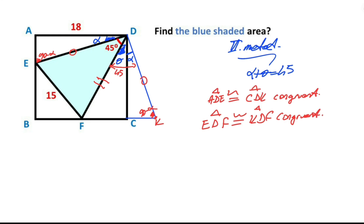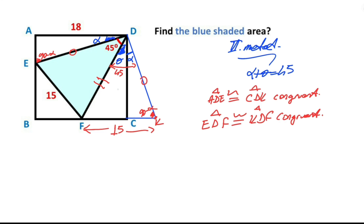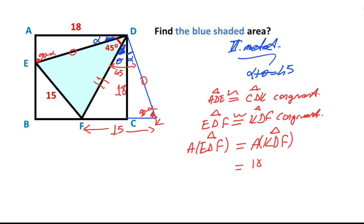So triangles ADF and KDF are congruent. Since the side opposite the 45-degree angle is 15, the corresponding side here must also equal 15 units. The length DC equals 18 because of the square. Therefore the blue shaded area equals the area of triangle KDF, which equals 18 times 15 divided by 2. That means the blue shaded area equals 135 square units. Thanks for watching — if you want more videos like this, please subscribe.